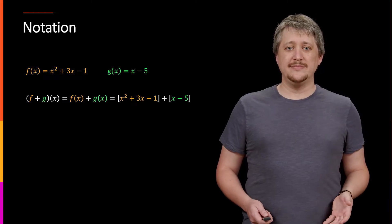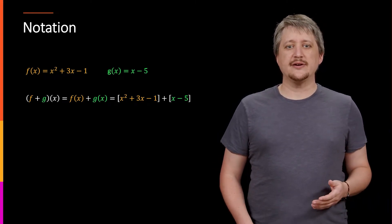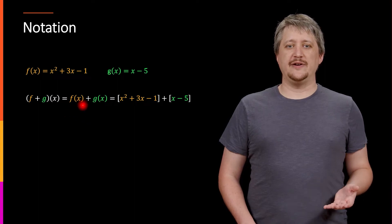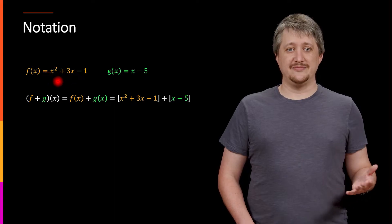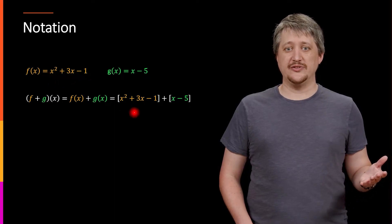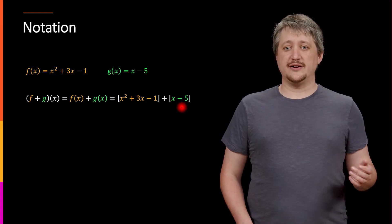So if we're going to add them, we do it exactly how you would expect. We add the two rules together. So we have f(x) + g(x), and I just replace f(x) with what it is. So this f(x) is x² + 3x - 1, so I just put that there. g(x) is this x - 5, so I just put it there.